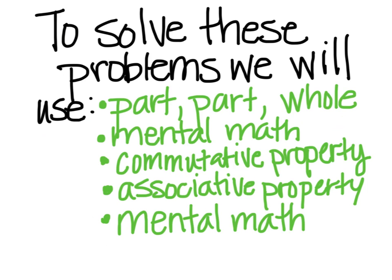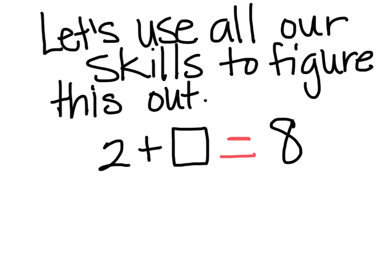Now, for the next couple of things you're going to see, we're going to use all of the skills — all the things that we've been learning. We've been learning part-part-whole, we've been talking about mental math, we talked about the commutative property where numbers get to trade places and the value still stays the same, and the associative property where I can group things differently and the value still stays the same. Using all those skills, let's figure this out: if I have the number two plus an unknown number — that's my missing part — I know it's got to equal the same thing as eight. Eight take away two is equal to six. I'm going to double check my answer: two plus six, that's eight. You did it.